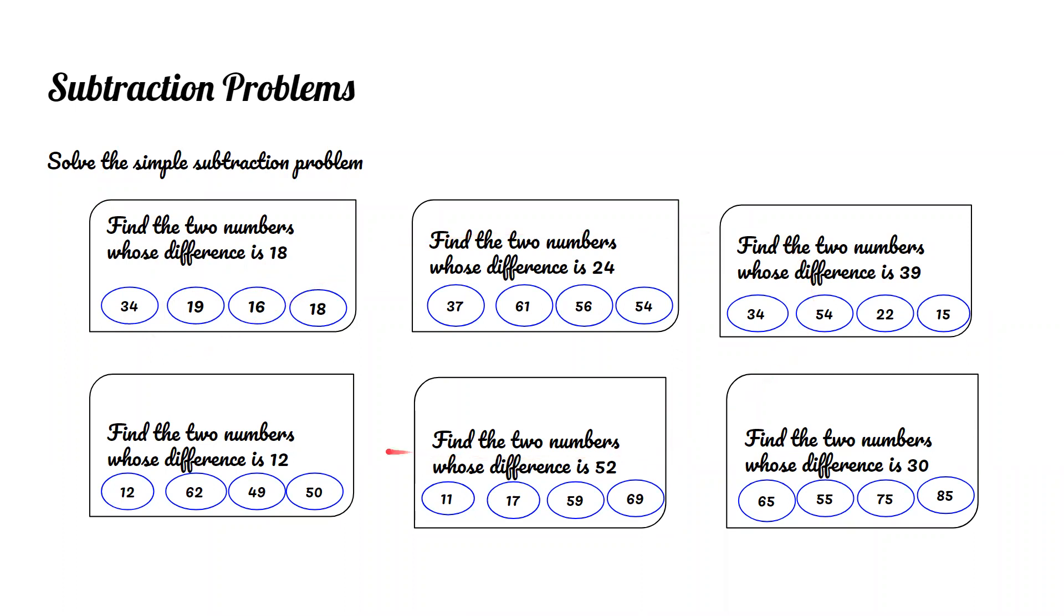Try these five problems. Answers for the subtraction problem. 61 minus 37 equals 24. 54 minus 15 equals 39. 62 minus 50 equals 12. 69 minus 17 equals 52. 85 minus 55 equals 30.